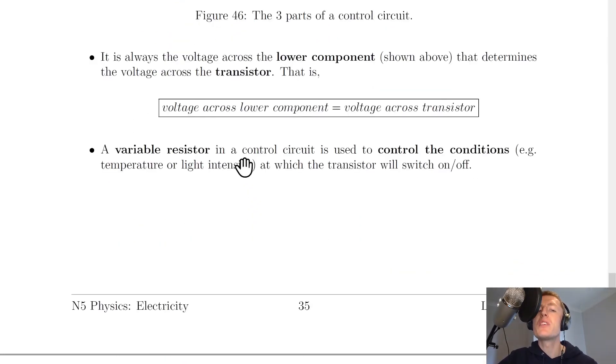A variable resistor in a control circuit is used to control the conditions, for example the temperature or light intensity, at which the transistor will switch on or off. If you're asked to explain or state the purpose of the variable resistor in the control or switching circuit, then you need to state these keywords: to control the conditions at which the transistor will switch on or off. You can try and be specific to the question. So if it's talking about an LED, you're trying to switch the LED on or off, or if it's a buzzer, for example, you could say it's used to control the conditions at which the transistor and therefore the buzzer will switch on or off.